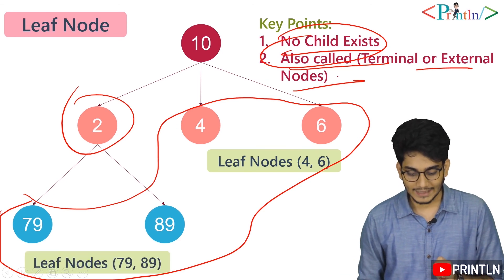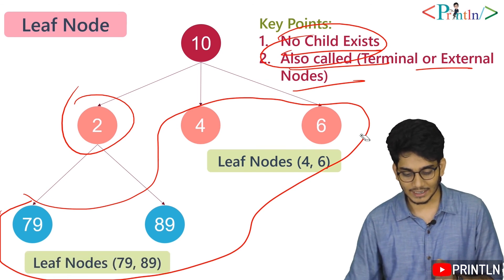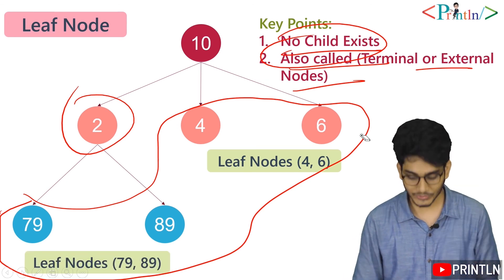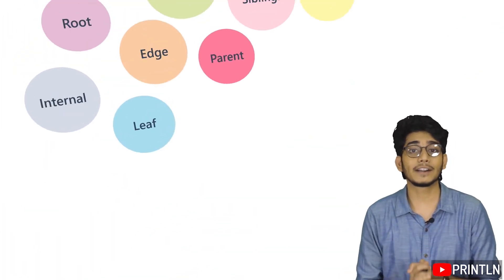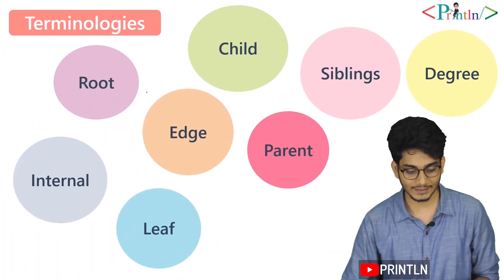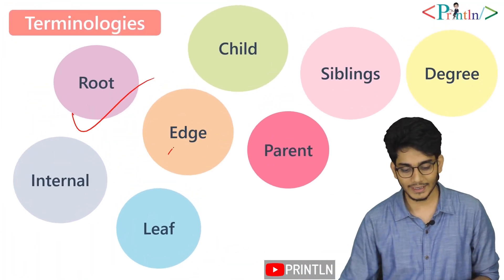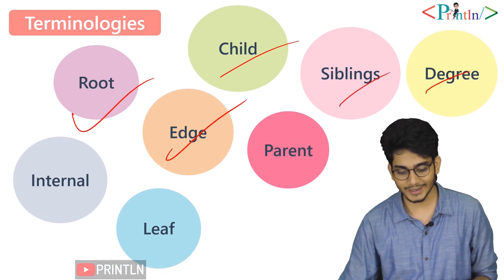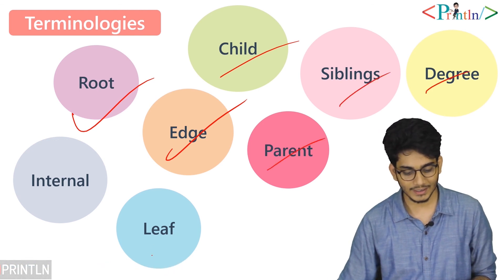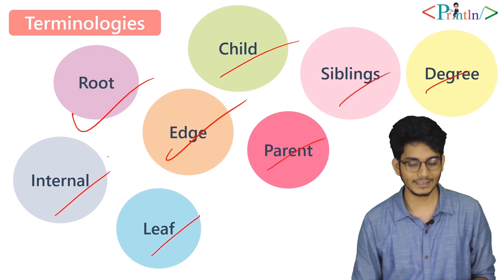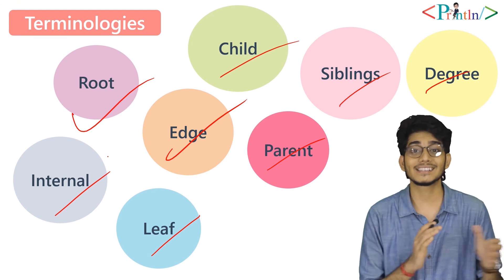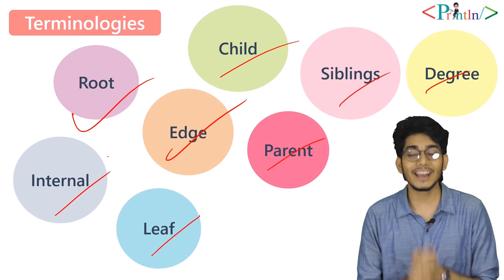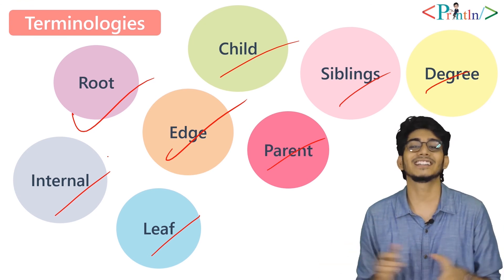These are the topics we covered in this video: root, edge, child, siblings, degree, parent, leaf, and internal nodes. In the next video we will talk about the remaining tree terminologies. If you have any doubts, write in the comment section. See you in the next video.